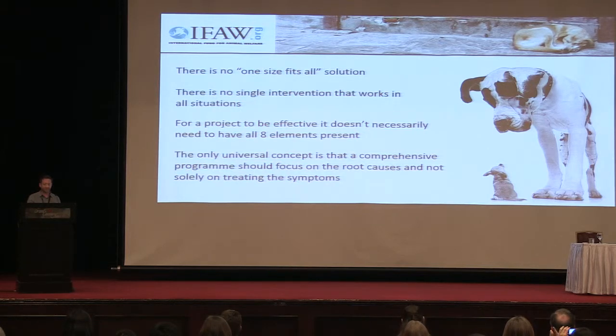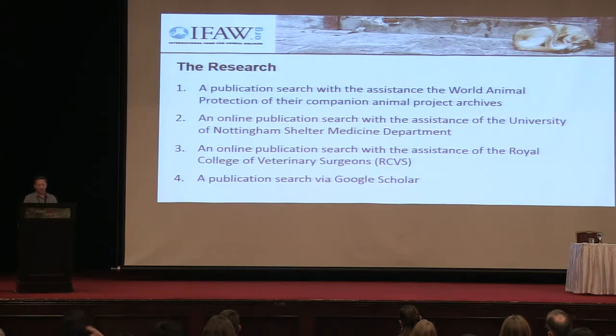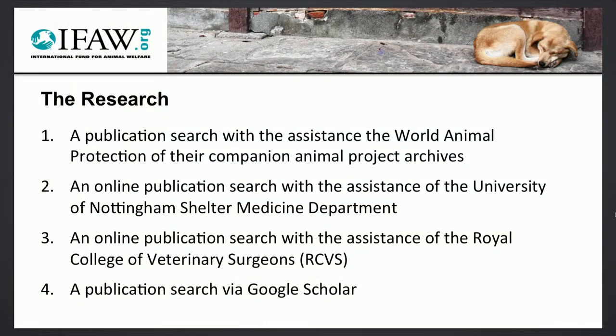We undertook a review to look across the entire companion animal sector and establish exactly what kind of data is out there that demonstrates the use and benefit of a comprehensive approach — something that could show us that what we're doing is having measurably positive results. I should make the point here that no one is suggesting that the premise of a comprehensive approach is incorrect and we should all just go out and build a giant shelter. This review process was simply to see exactly what's out there that demonstrates what we believe to be true: that a comprehensive approach is an effective approach. So, research. We started with desk-based research and identified published and unpublished data from companion animal projects around the world, and we used four different sources to access this data.